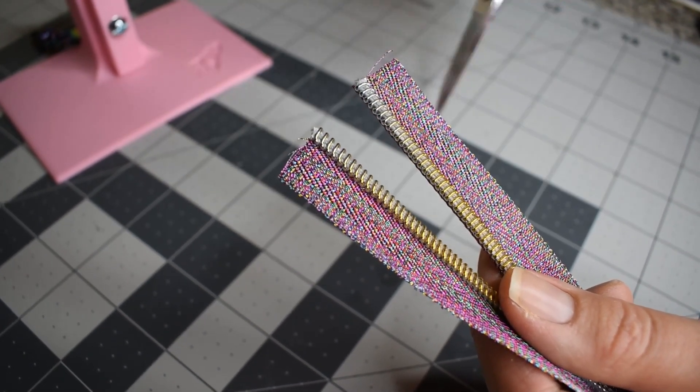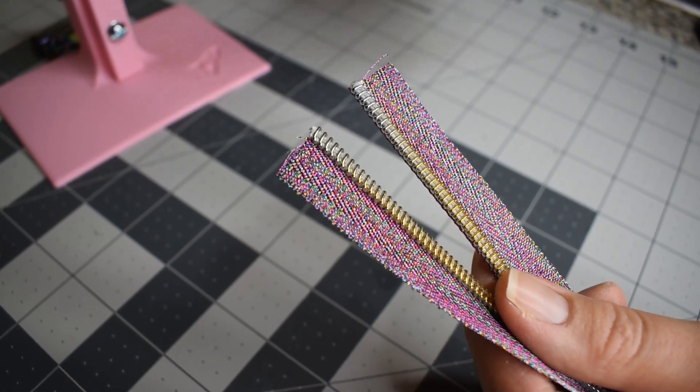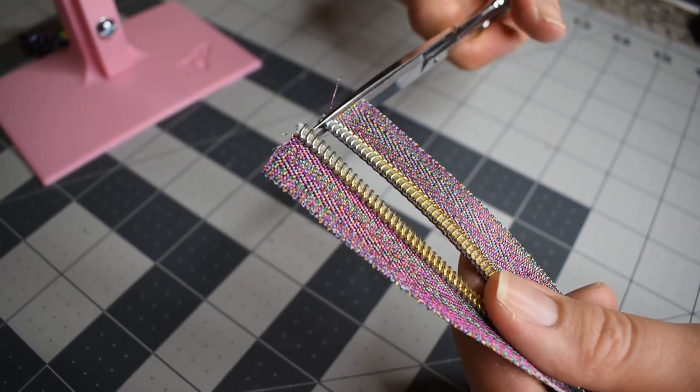To use the zipper vise, you first need to straighten out the edges of your zipper. This just helps you to feed it in a lot more evenly and gives it a nicer finish.